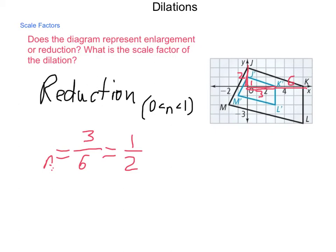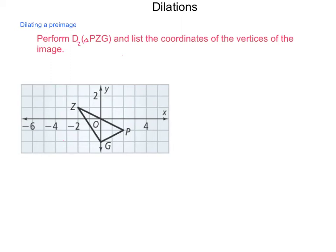Once we have this figured out and know whether or not we're enlarging or reducing our size, how can we go about drawing an image set ourself? We're going to perform a dilation of 2 on triangle PZG, and list the coordinates of the vertices of the image. When we're given a dilation written in this manner, with simply the scale factor, and we're on a grid, it's assumed that our center of dilation is going to be the origin. If we have a dilation of n on a given point x, y, then we're simply going to multiply each coordinate by that factor. We'll have nx, ny.